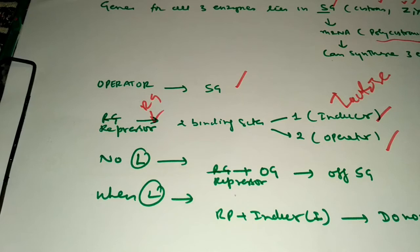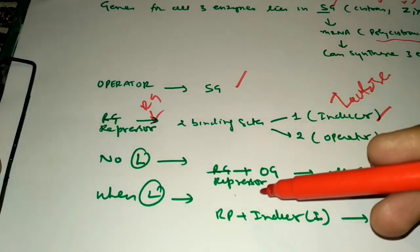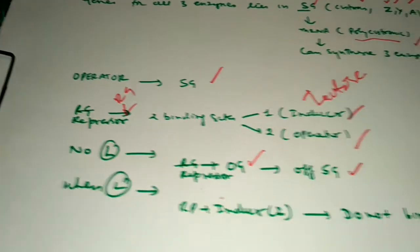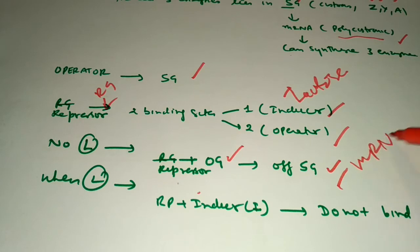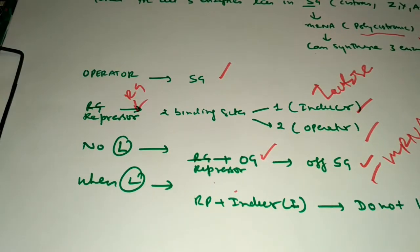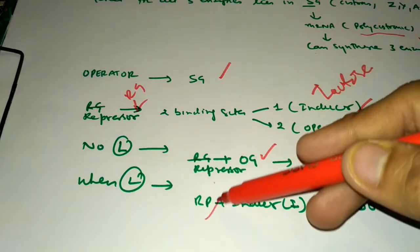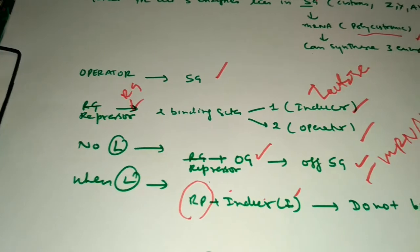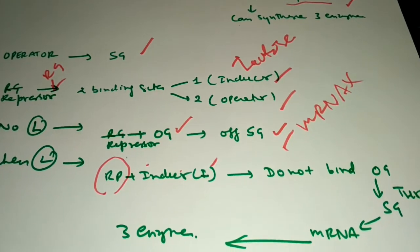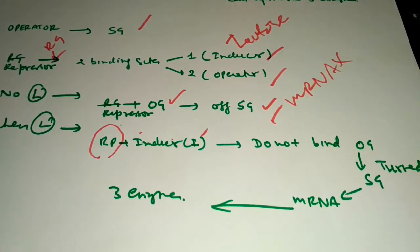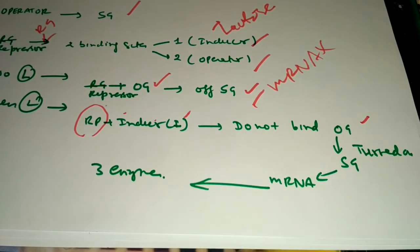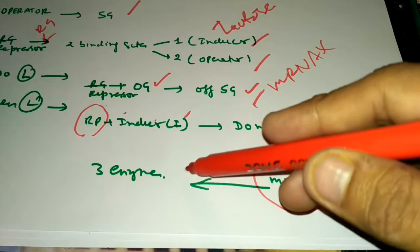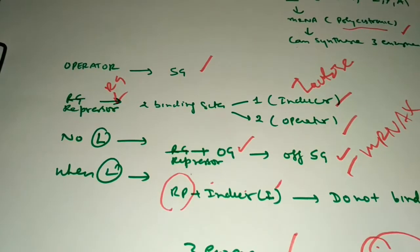In the first condition, when there is no lactose, the repressor is active and it binds with the operator, switching off the structural gene. When the structural gene is switched off, no messenger RNA is formed. In the second condition, when lactose is added to the culture medium, the repressor formed by the regulator gene binds with the inducer, inactivating the repressor. This inactivated repressor cannot bind with the operator gene, so the structural gene is switched on and polycystronic mRNA is synthesized — producing the three enzymes for lactose metabolism in E. coli.